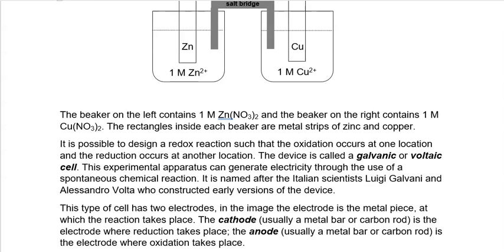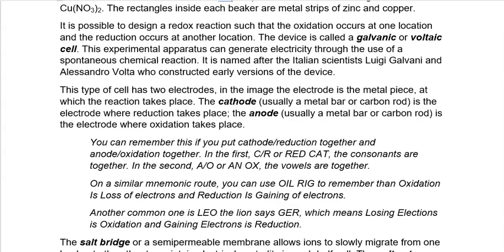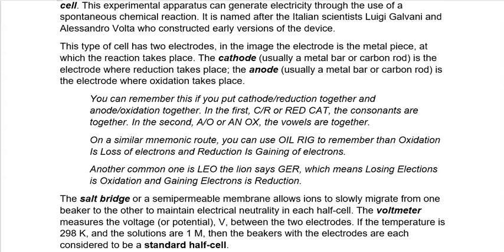A cathode is where reduction takes place, and an anode is where oxidation takes place. We're already remembering things like whether oxidation or reduction is loss or gain of electrons, and the definition of oxidizing or reducing agents. Now we also have to remember where oxidation and reduction occur. I have a couple of mnemonics that might help you remember these things a little bit quicker.